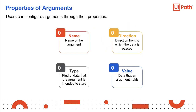The user can configure an argument through its properties which are similar to that of variables. The arguments have the following properties: name, direction, argument type, and default value.